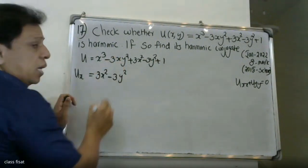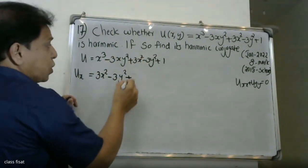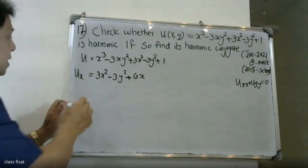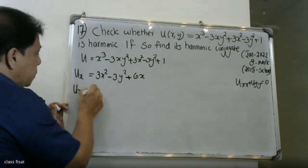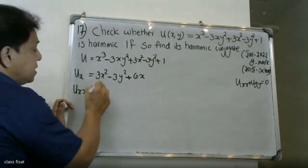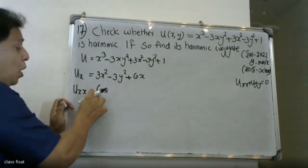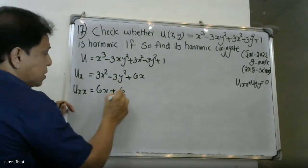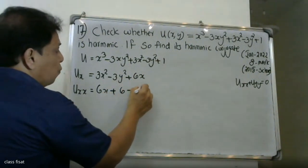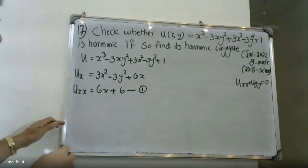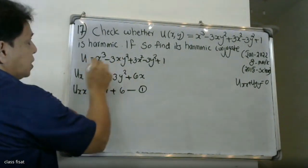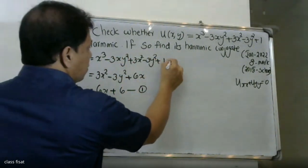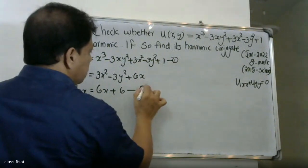Differentiating u with respect to x: ux = 3x² minus 3y² plus 6x. Differentiating ux again with respect to x: uxx = 6x minus 0 plus 6, which gives uxx = 6.